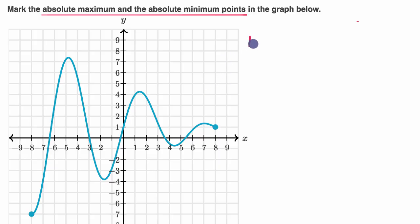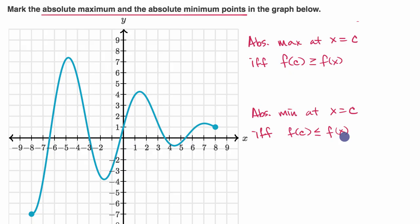So you have an absolute maximum point at, let's say, x equals c if and only if f of c is greater than or equal to f of x for all the x's in the domain of the function. And you have an absolute minimum at x equals c if and only if f of c is less than or equal to f of x for all the x's over the domain.